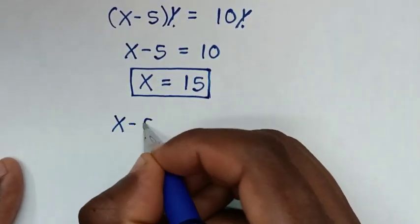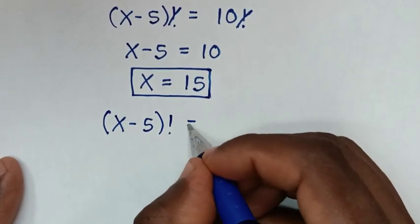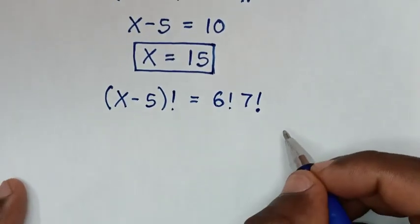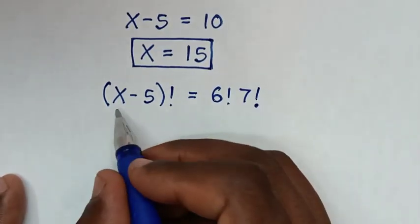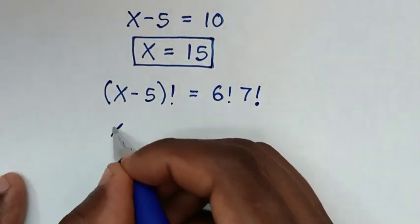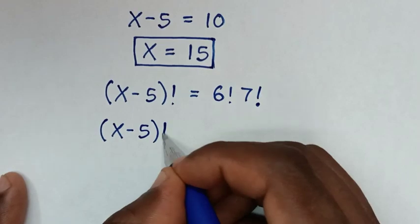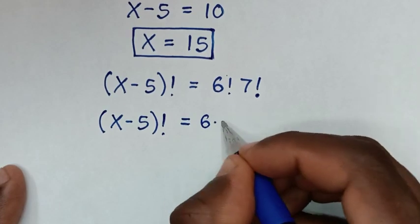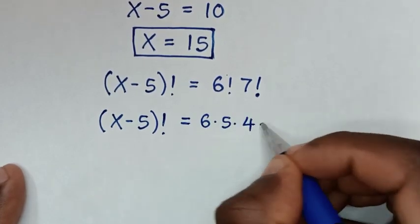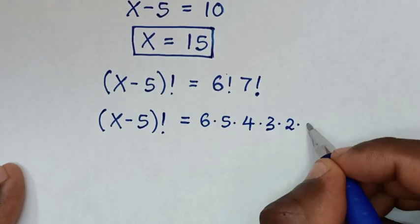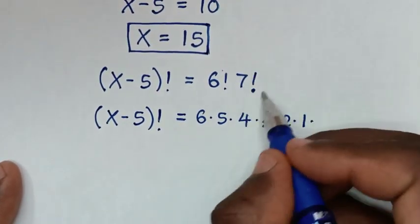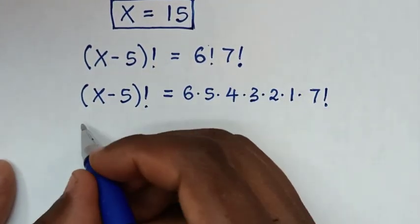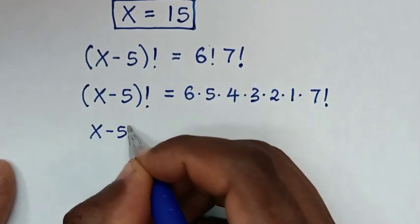Therefore 15 is our final answer. Now to solve using another method: from our problem, (x minus 5) factorial is equal to 6 factorial times 7 factorial, to find the value of x. On the left side it is (x minus 5) factorial, and on the right side 6 factorial is 6 times 5 times 4 times 3 times 2 times 1, then times 7 factorial.